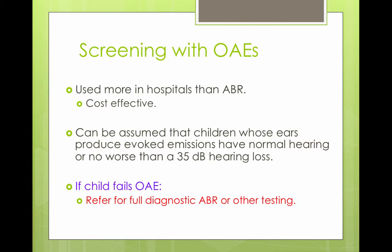Another option is screening with otoacoustic emissions. Otoacoustic emissions are less expensive than the ABR, but they only go up to the cochlea. If a child fails an OAE screen, you need to refer them for a full diagnostic ABR. It is assumed that children whose ears produce these evoked emissions have normal hearing or no worse than 35 dB hearing loss.